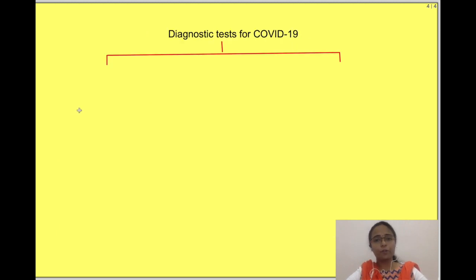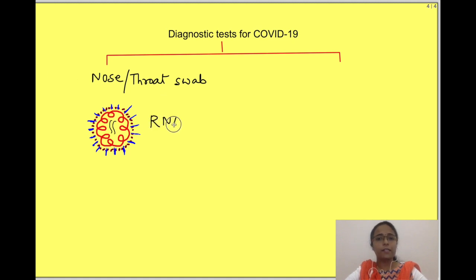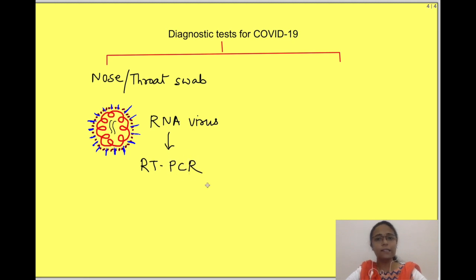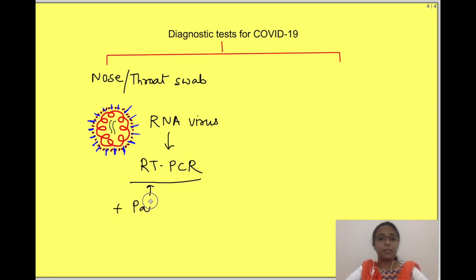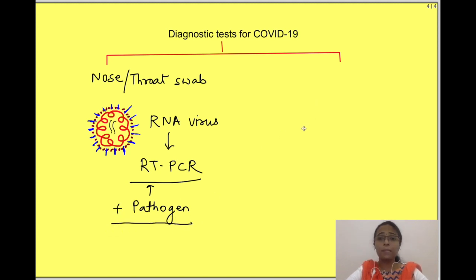So how is the presence of coronavirus established? The sample for coronavirus is either a nose or throat swab, and since coronavirus is an RNA virus, reverse transcriptase PCR is used to identify its genetic material. However, there is one problem: it can detect the virus only when it is present in a person. It gives no information if the person was infected earlier and the infection has since resolved. This is important because some people may have been infected but showed no symptoms or very mild symptoms and were not tested.